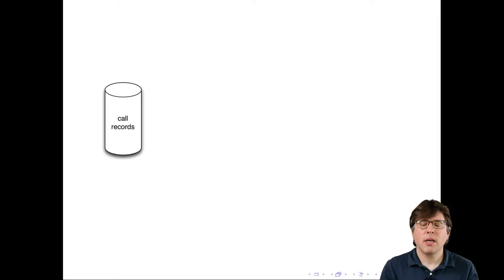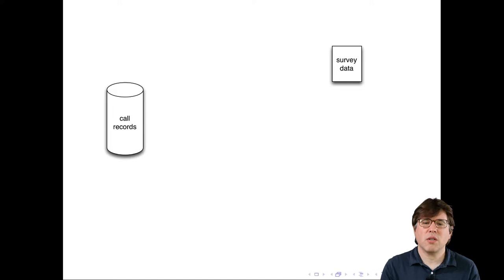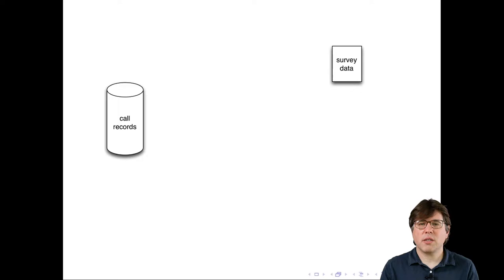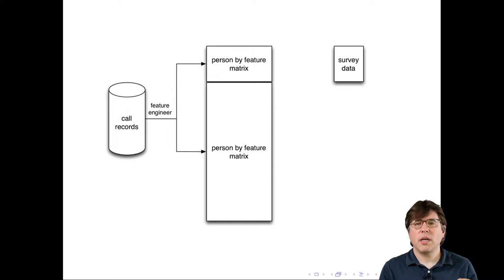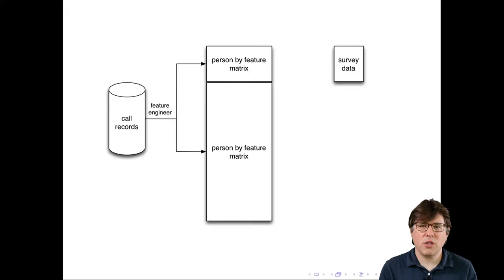The call records provide a lot of information about these 1.5 million customers, but they don't provide exactly a measure of poverty and wealth. So the researchers took a random sample of these people and actually called them and gave them a survey — a traditional social science survey designed to measure poverty in developing countries. Then they linked up these two very different kinds of data to use them together. First they took the call records and went through a process called feature engineering, converting records with one row per call into something with one row per person and one column per feature.